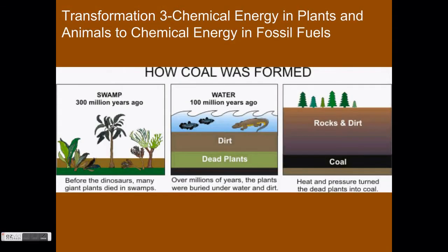These prehistoric plants and animals will eventually die and begin to decompose. Under certain conditions, the decomposing remains will be preserved in a single location and buried. After about 300 million years, heat and pressure from layers of rock piling on top will change the decaying plants and animals into coal and oil. These are called fossil fuels because they originated from prehistoric plants and animals. Fossil fuels are defined as chemical energy found in long dead organisms. Transformation three occurs when chemical energy in plants and animals transfers to chemical energy in fossil fuels about 300 million years ago.